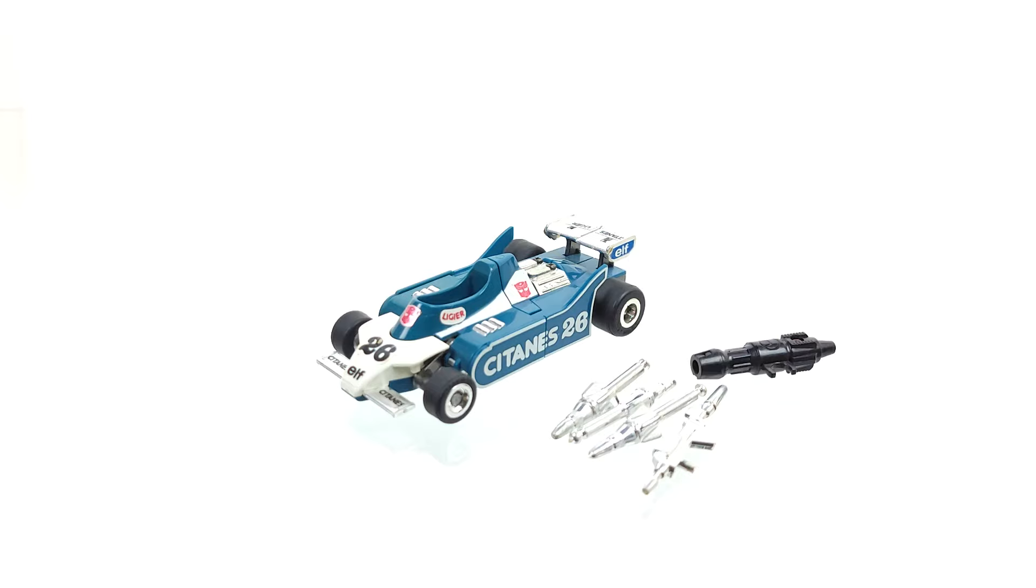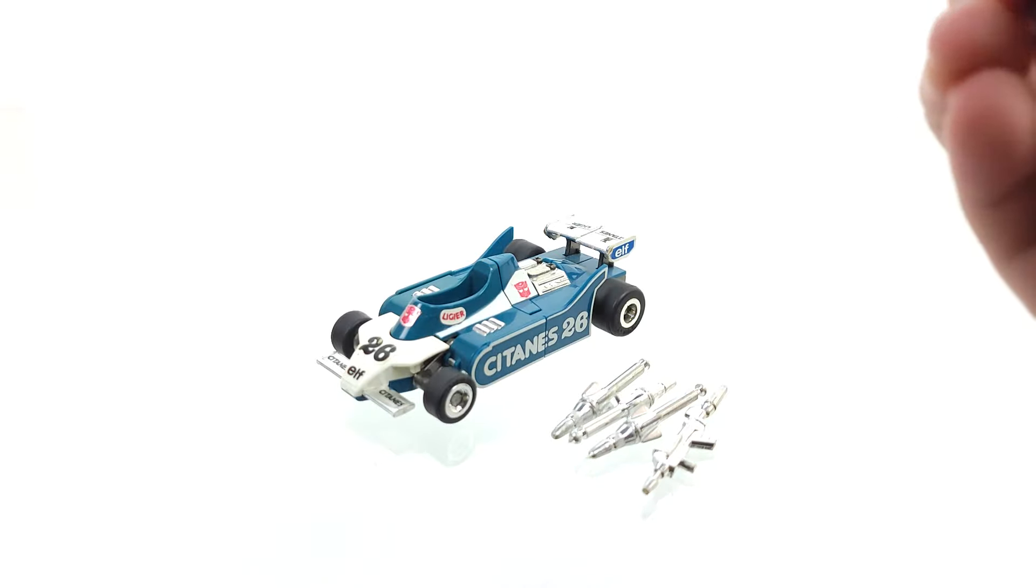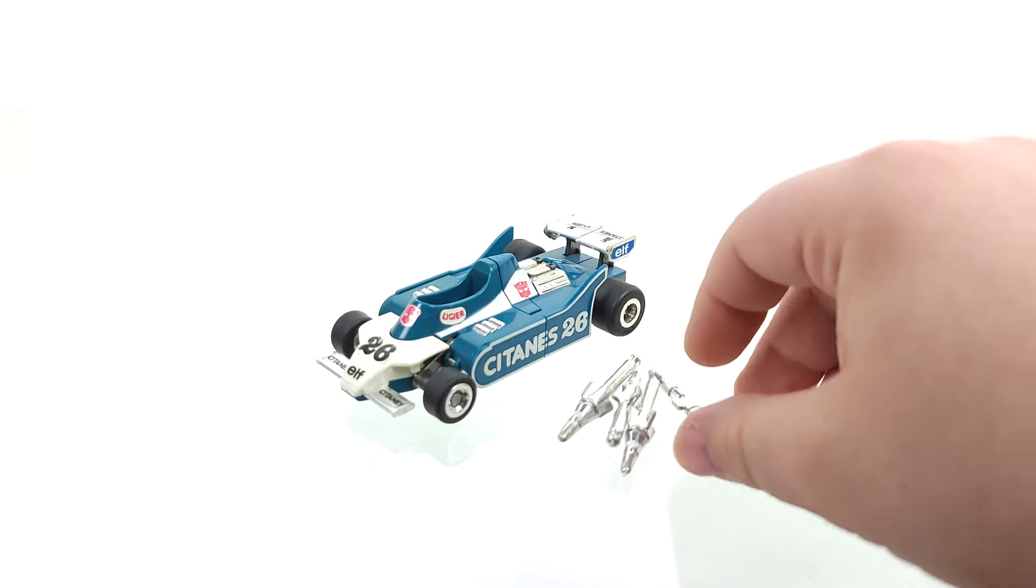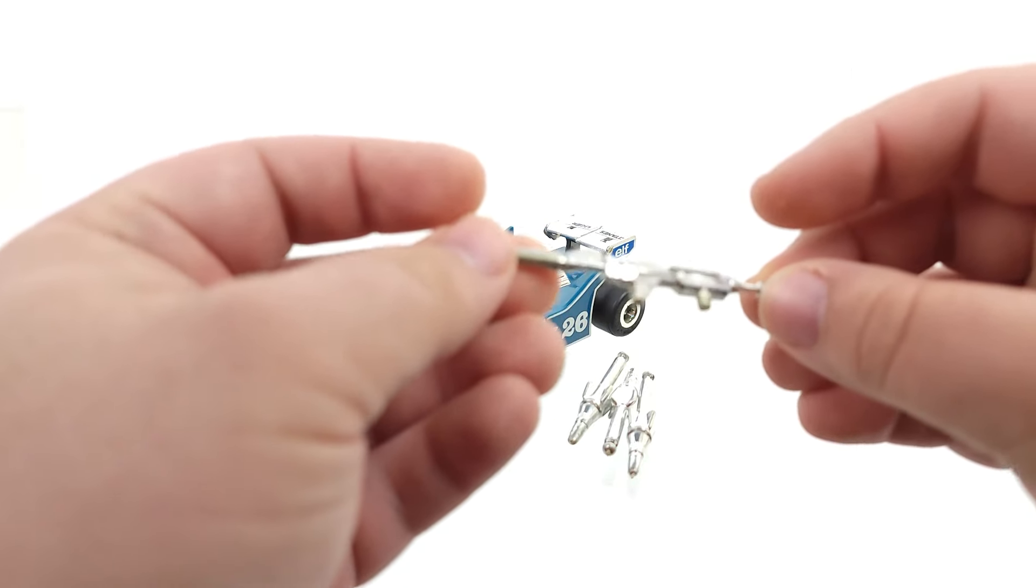It's complete, I believe. I think all it came with was the shoulder launcher, three missiles, and a blaster. So you can see we've got all that stuff here. Shoulder launcher, the spring is shot in it. I could probably replace that, all things considered. And here's the blaster. We got a little chrome wear on it, but that's to be expected with something this old.